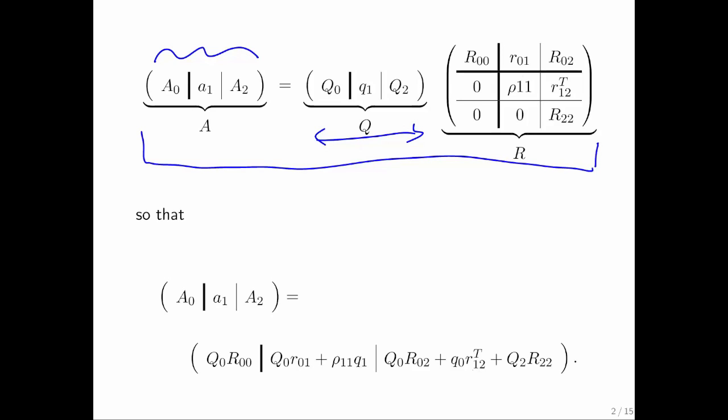So let's partition as such and let's see what comes out. When we partition matrices, often the next thing that we do is to multiply partitioned matrices together. So let's multiply these together. So on the left, we continue with our A0, A1, A2. And notice that if we multiply the Q times R, we must retain the equality.